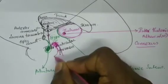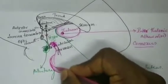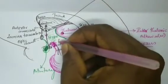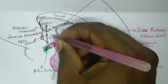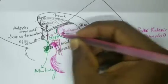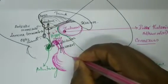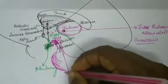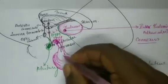Then it continues as the pons — you can see this anteriorly bulched portion is the pons. There is a communication here from the third ventricle called the cerebral aqueduct, which will be communicating to the fourth ventricle, which is present behind the pons and medulla.